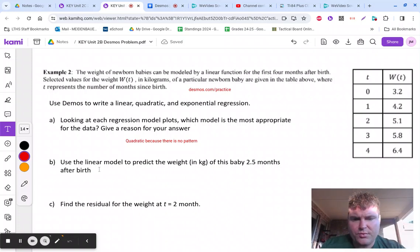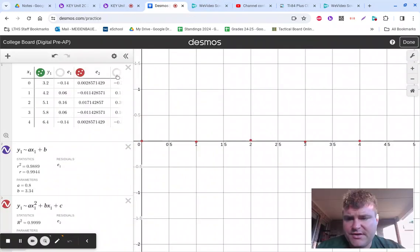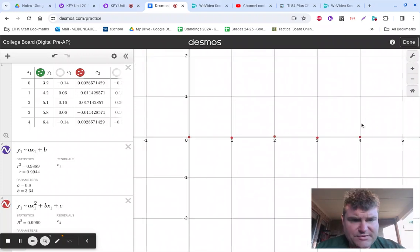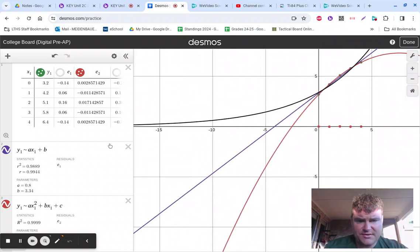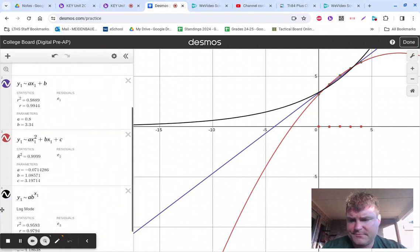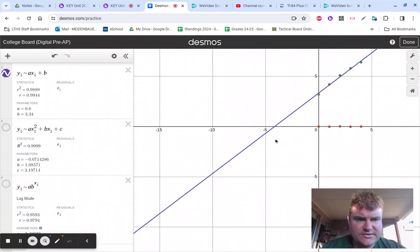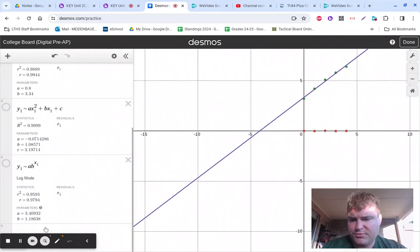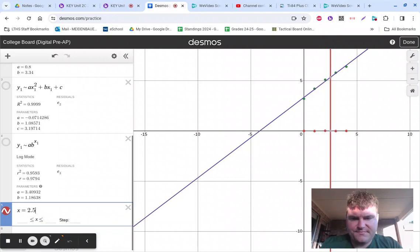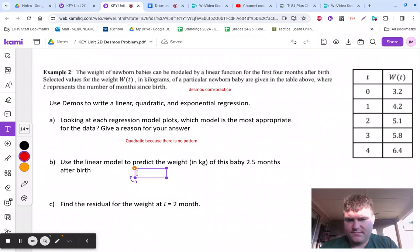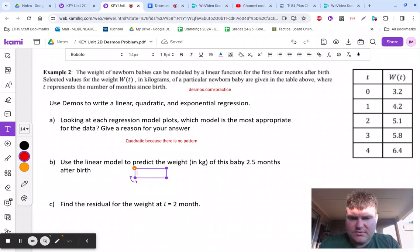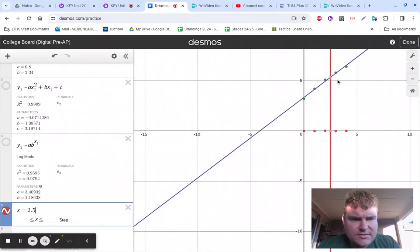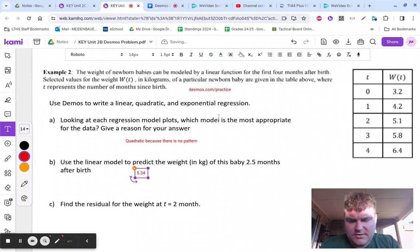Use the linear model to predict the weight of this baby at 2.5 months. So I'm going to use the linear model. I'm going to zoom back out. Everything here is still graphed. So the linear model is going to be the purple one. I'm going to unclick these two because I don't care about those. And I want to know what's going on at 2.5, so I'm going to do X equals 2.5 and see where these intersect. So that intersects at 2.5 comma 5.34. So the weight is going to be 5.34 kilograms.